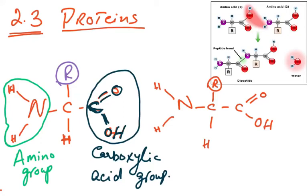This video is going to be about chapter 2.3, subheading 1: describe and draw the general structure of an amino acid and the formation and breakage of a peptide bond. So basically what you've got to understand is what an amino acid is made up of.